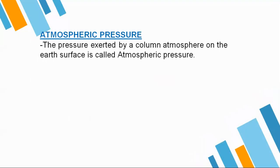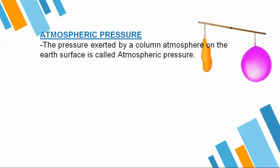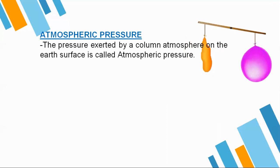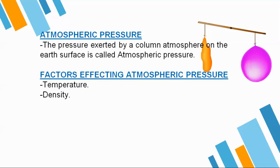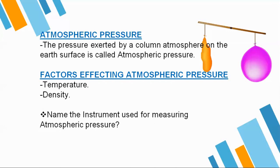Let us go to atmospheric pressure. Atmospheric pressure is the pressure exerted by the column of atmosphere on the earth surface — the pressure exerted by the atmosphere vertically on the earth surface. We already know atmosphere is a layer of air that surrounds the earth. Does air have weight? Yes it does. The yellow balloon is deflated — there is no air inside — whereas the pink balloon has got air inside and it is much heavier. This shows that air has weight, and that is why atmospheric pressure is experienced on the earth. The factors that affect atmospheric pressure are firstly temperature and secondly density. The instrument used for measuring atmospheric pressure is your mercury barometer.